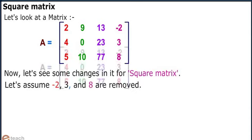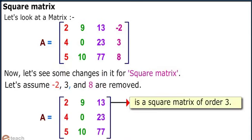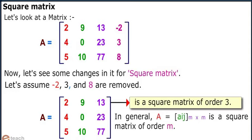Let's assume -2, 3, and 8 are removed. Then A becomes a square matrix of order 3. In general, A = [aij]m×m is a square matrix of order m.